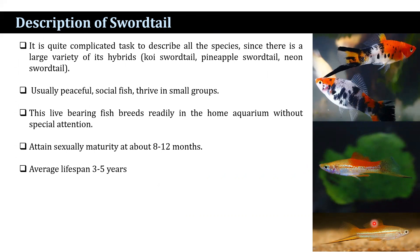The wild swordtail has an olive green body with green, red, or brownish stripes along the lateral lines of the sides. They can also have speckles on the dorsal fin and sometimes on the caudal fin. Swordtails are usually peaceful, lively fish that swim in loosely grouped schools, and they are generally considered a good community fish.